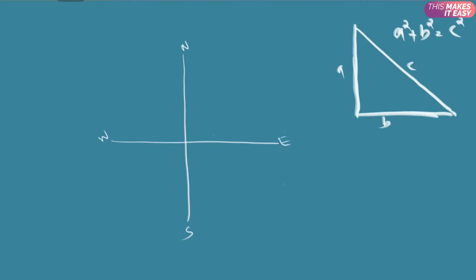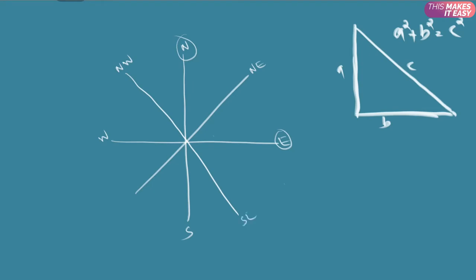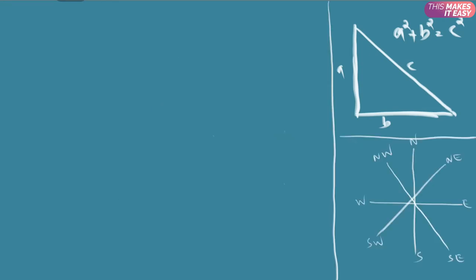If remembering the directions is difficult, I suggest drawing them right after entering the exam hall and getting rough paper from the invigilator — you can even write it before the exam starts. Along with these 4 main directions, there are also sub-directions: North-East, North-West, South-East, and South-West — combinations of the main directions. Usually, 3 types of questions come from this topic: one related to distance, one to direction, and one combining both.